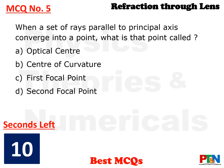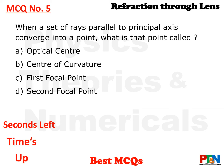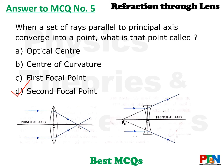Next MCQ. When a set of rays parallel to the principal axis converge into a point, what is that point called? Options: optical center, center of curvature, first focal point, or second focal point. 10 seconds time. Time is up. The answer is second focal point. When parallel rays converge onto a focus — or for a concave lens, appear to come out from a point — that focus is called the second focal point.